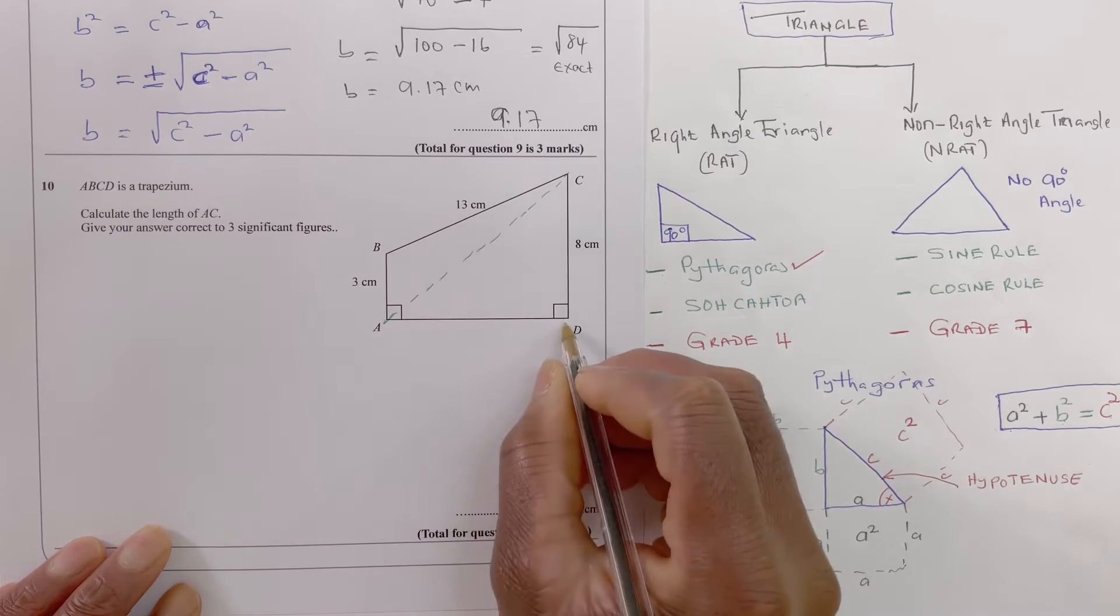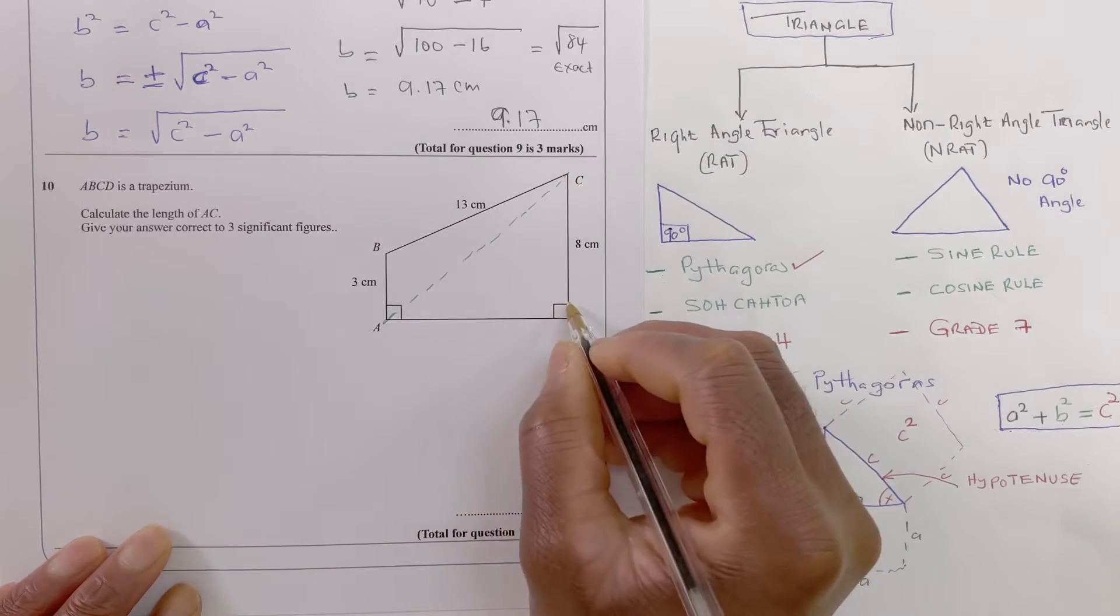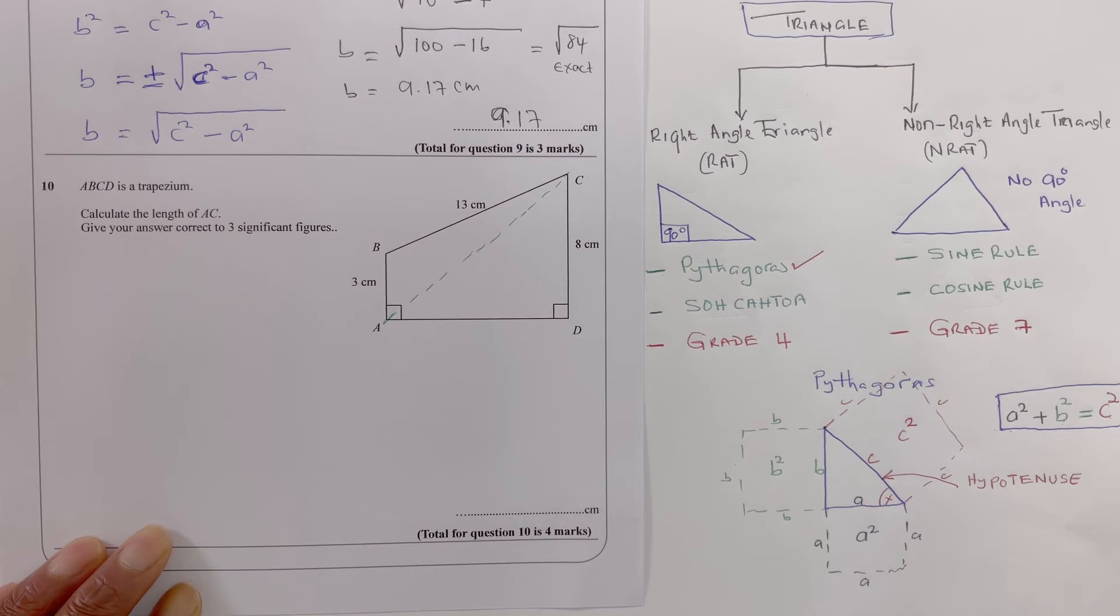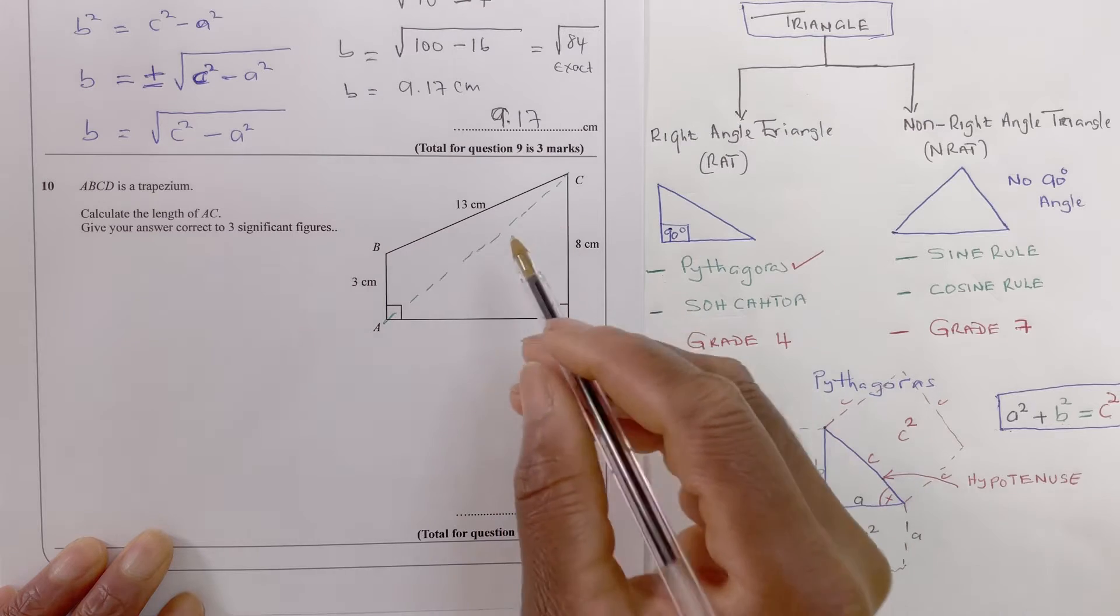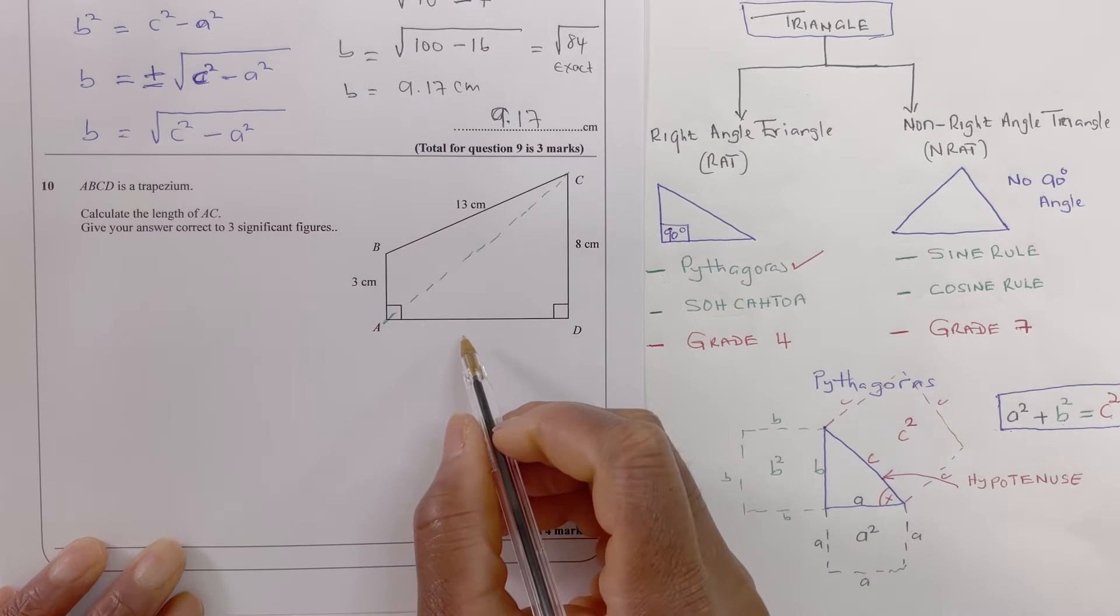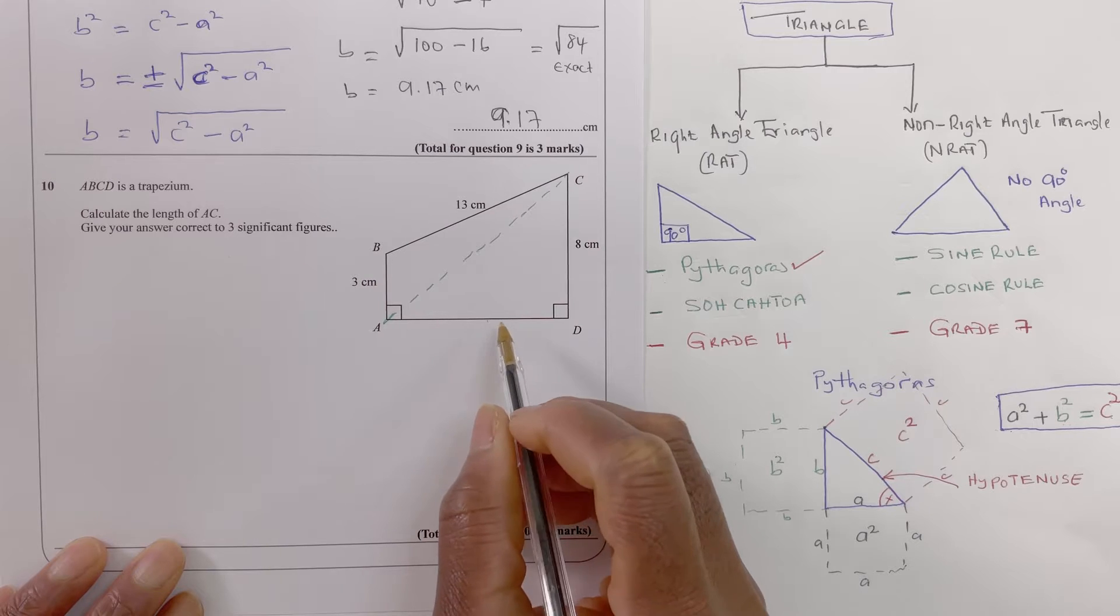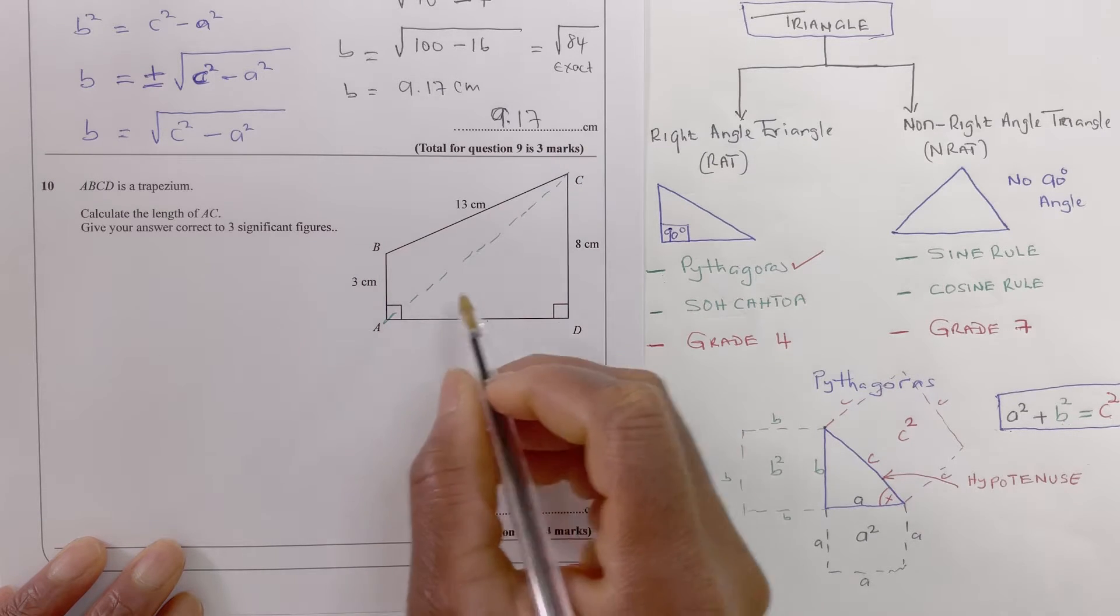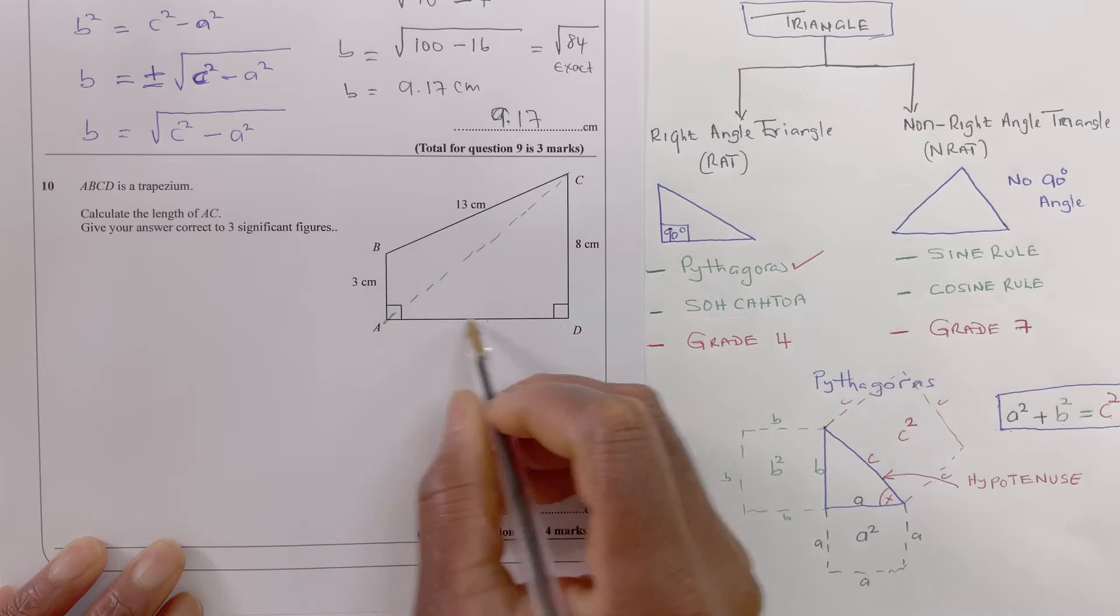But I don't know this side. I need to know that to be able to calculate AC because it's a right angle triangle. So you always need two values to be able to calculate a third one. So to find this I may have to do something special. I may have to calculate the, I want to find that length.